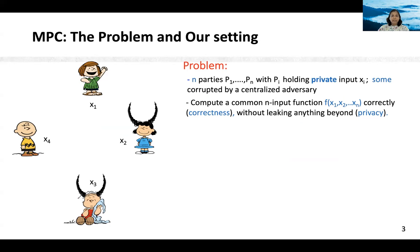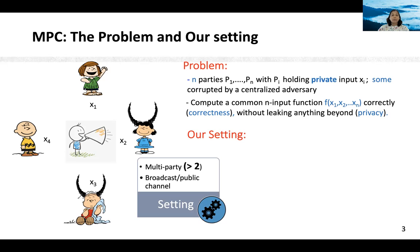Let us begin with the definition of MPC. MPC permits a collection of data owners to perform a collaborative computation correctly on their private inputs, without revealing anything beyond the computation output. The distrust is modeled by a centralized adversary that can corrupt some of the parties. MPC has been studied over various adversarial and security settings.